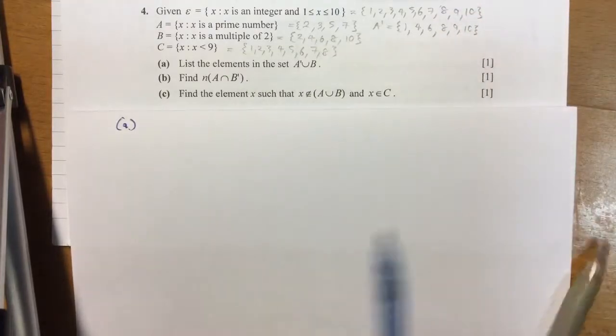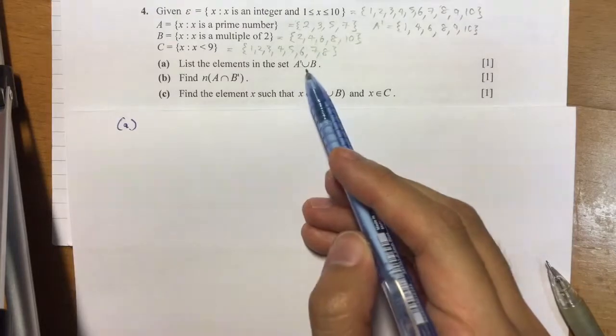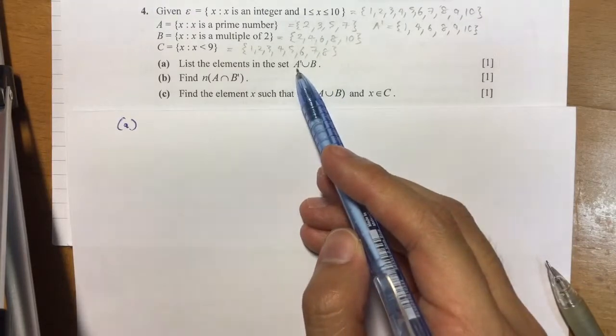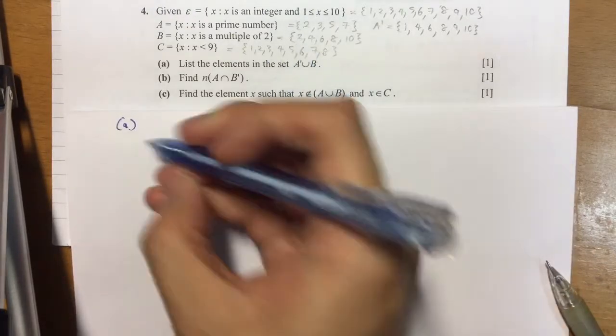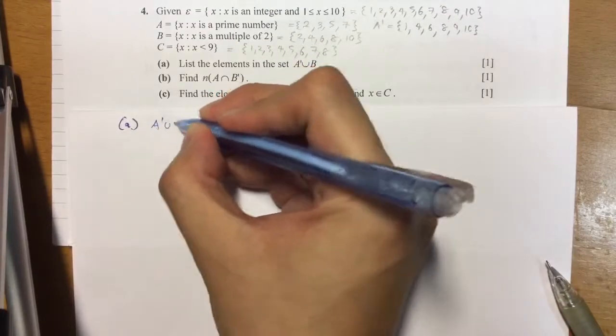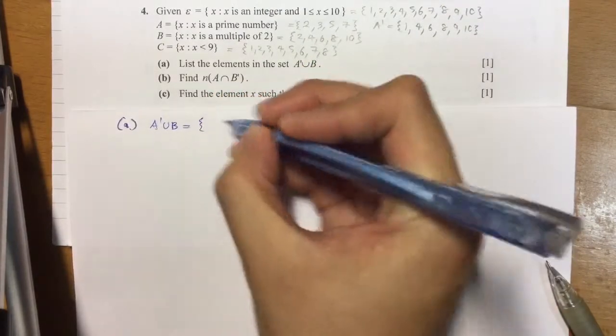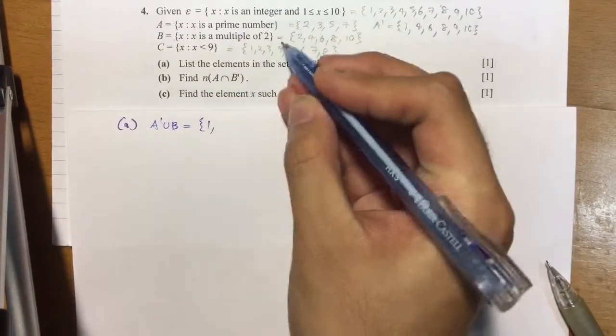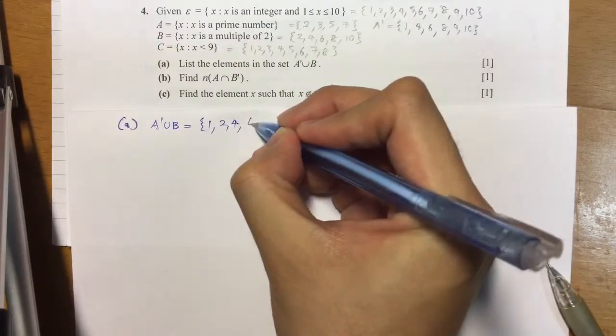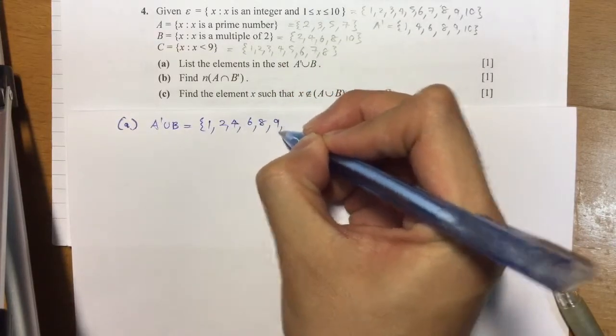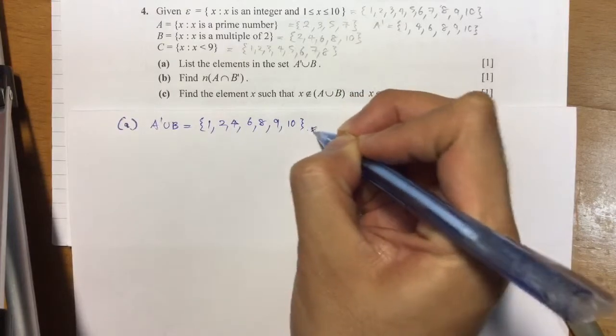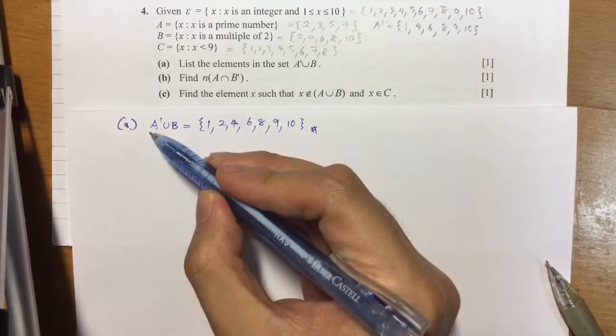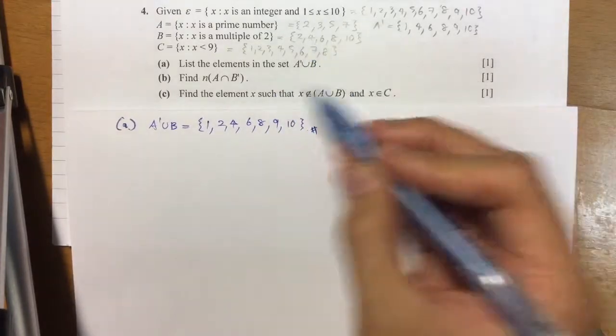Okay, so now we want all the elements inside the set A prime union B. So anything inside A prime and anything inside B, I'm just going to list it all out here. So we start with 1, we have 2, we have 4, we have 6, we have 8, 9 and 10. So that's it. All the elements inside A prime union B just by listing everything out.